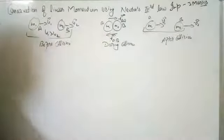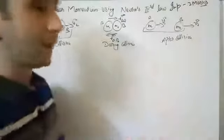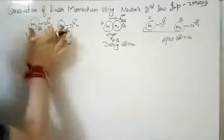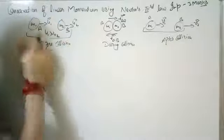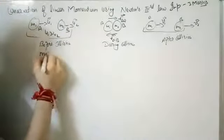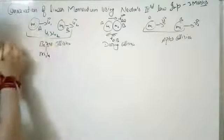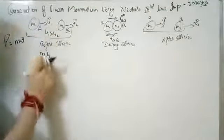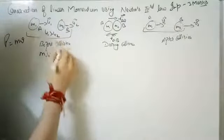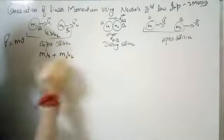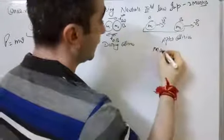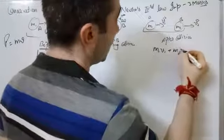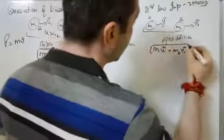We have to show the conservation of linear momentum — that the total momentum before collision equals the total momentum after collision. Before collision, the total momentum is M1·U1 plus M2·U2. After collision, the total momentum is M1·V1 plus M2·V2. We will show these are equal.